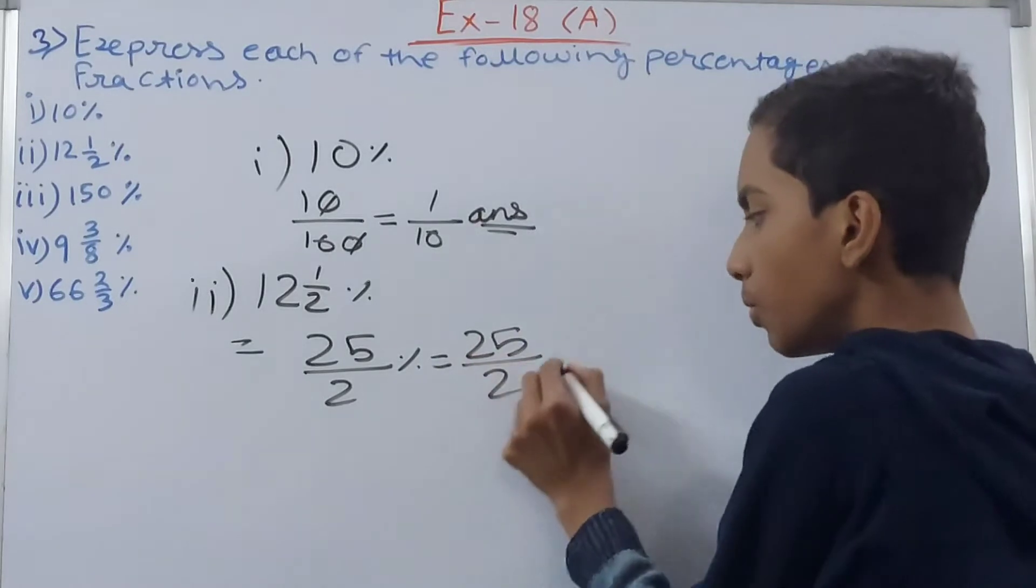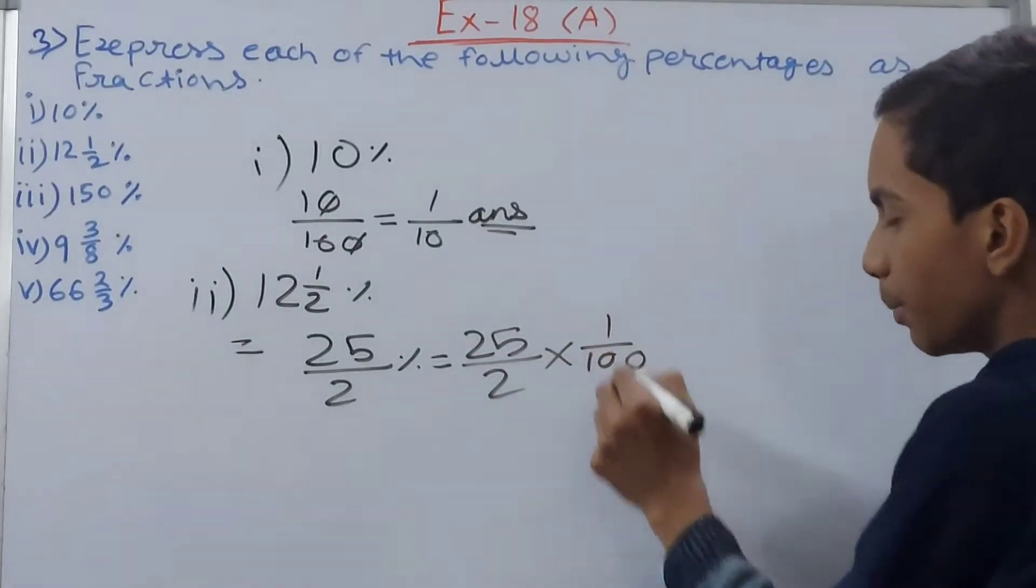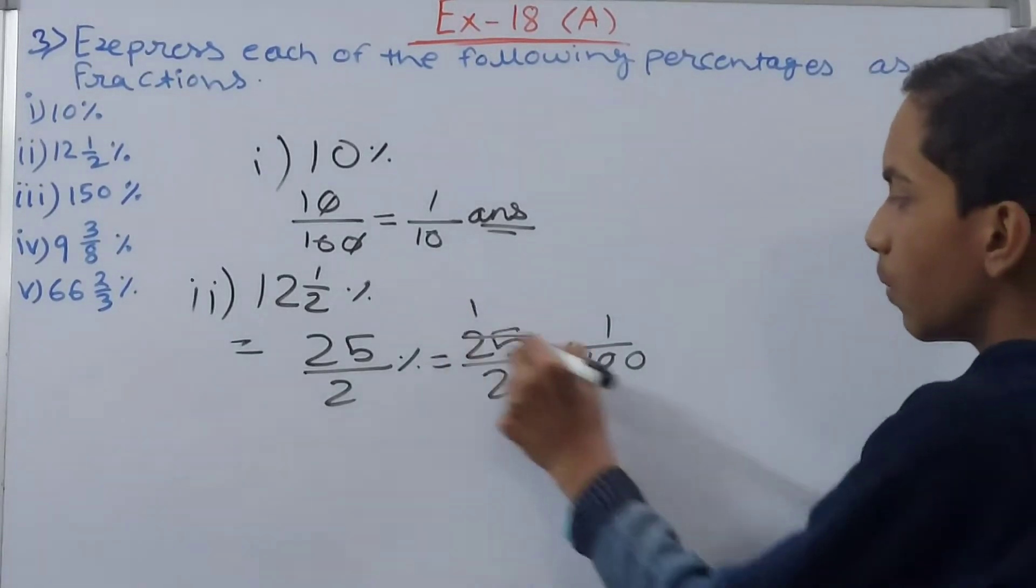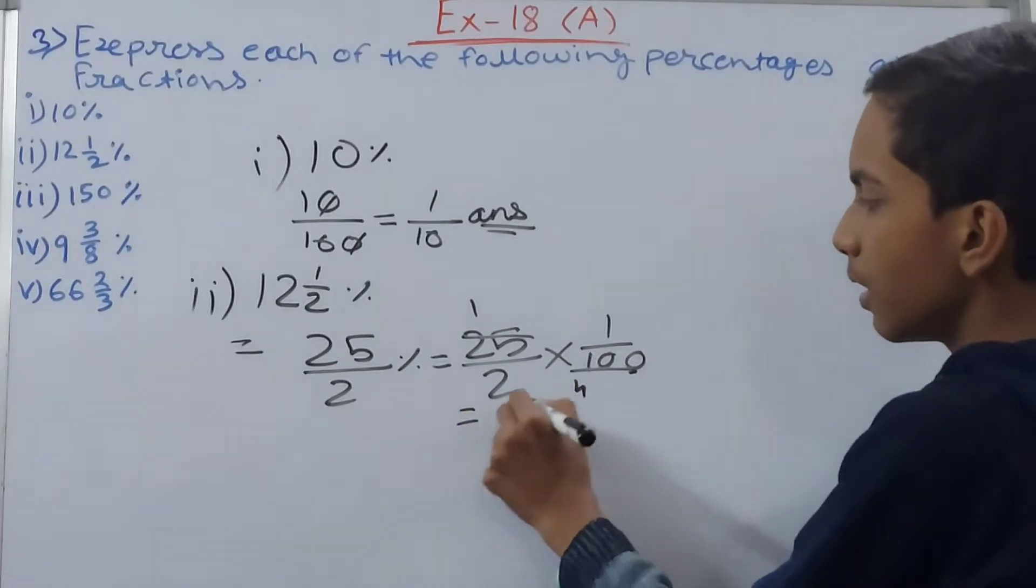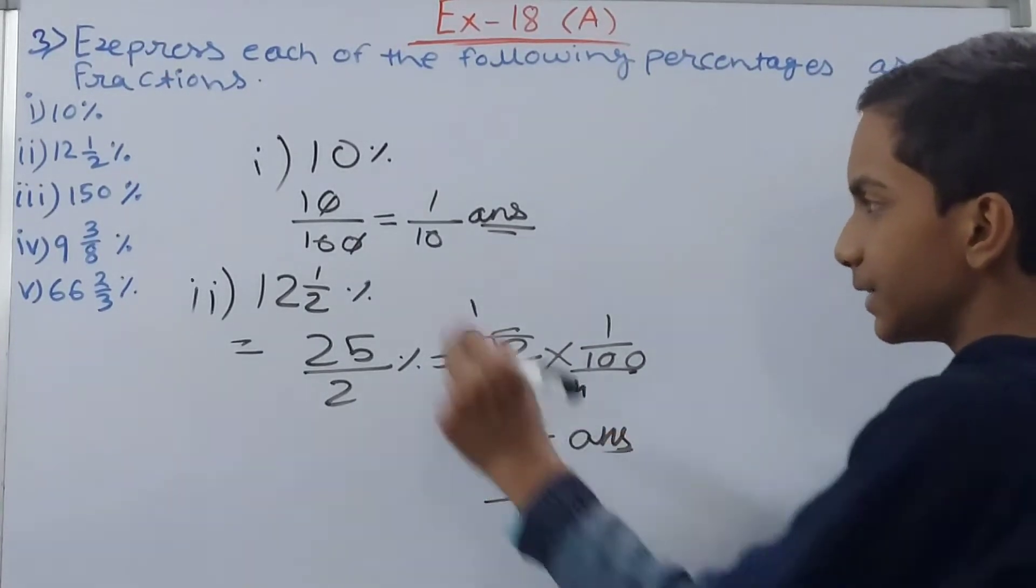So into 1 upon 100, reciprocate 100, so you get 1 upon 100. Solve this, 1 and 4, so you get here 1 upon 8. So this becomes our answer.